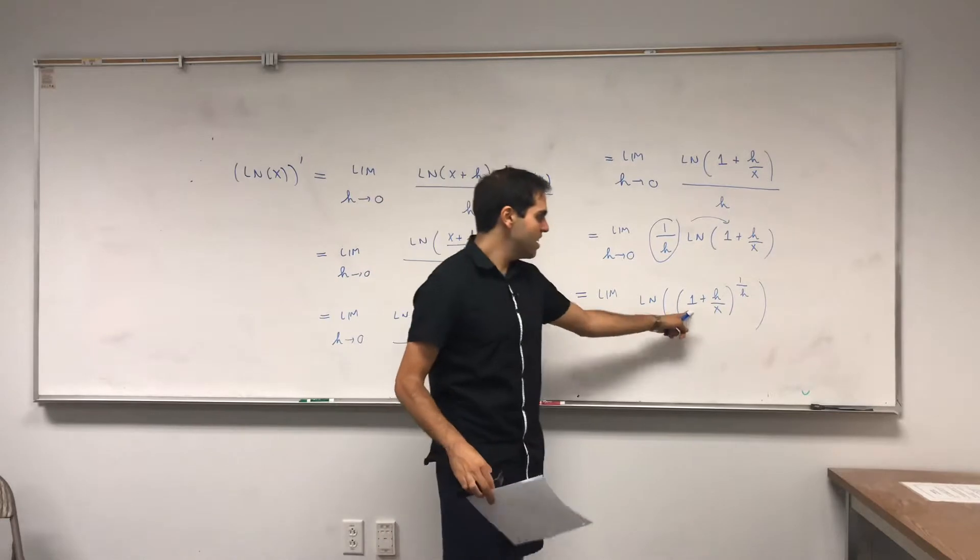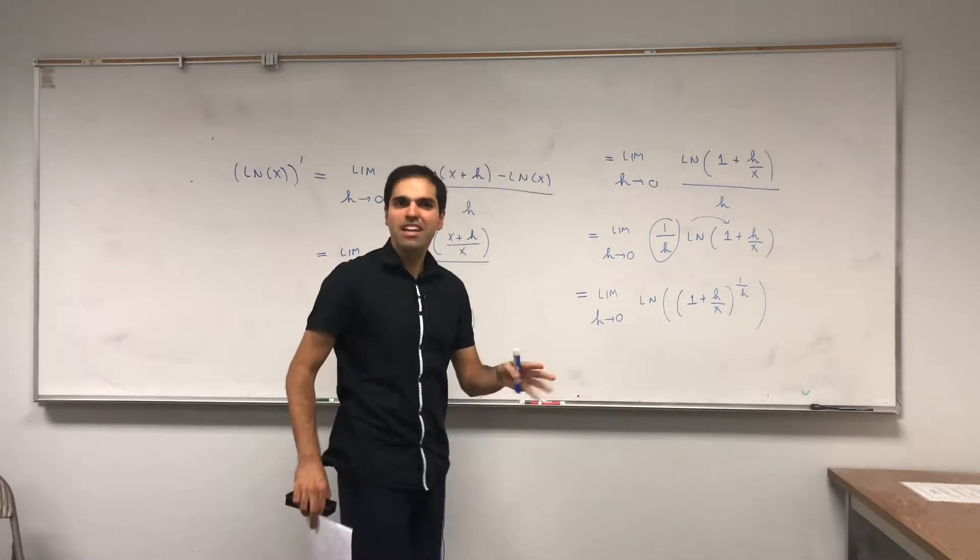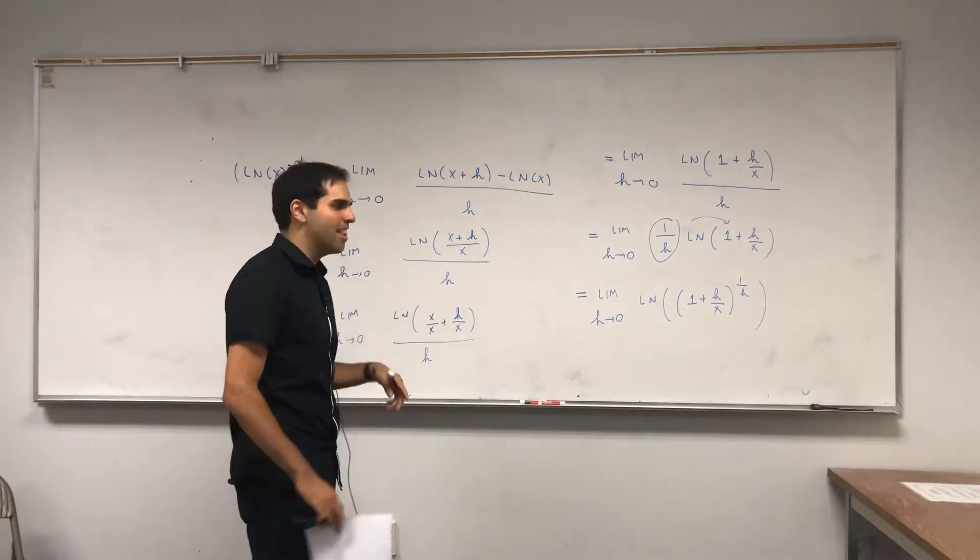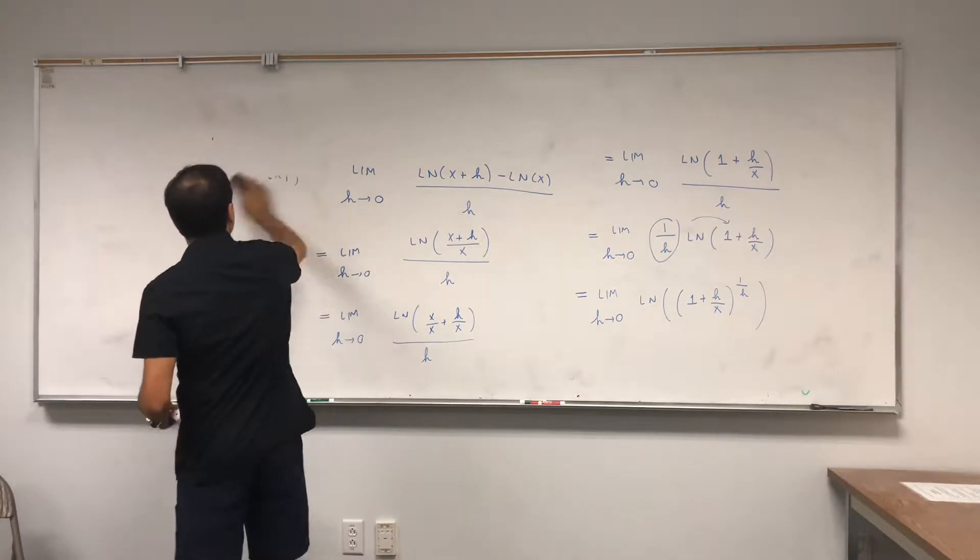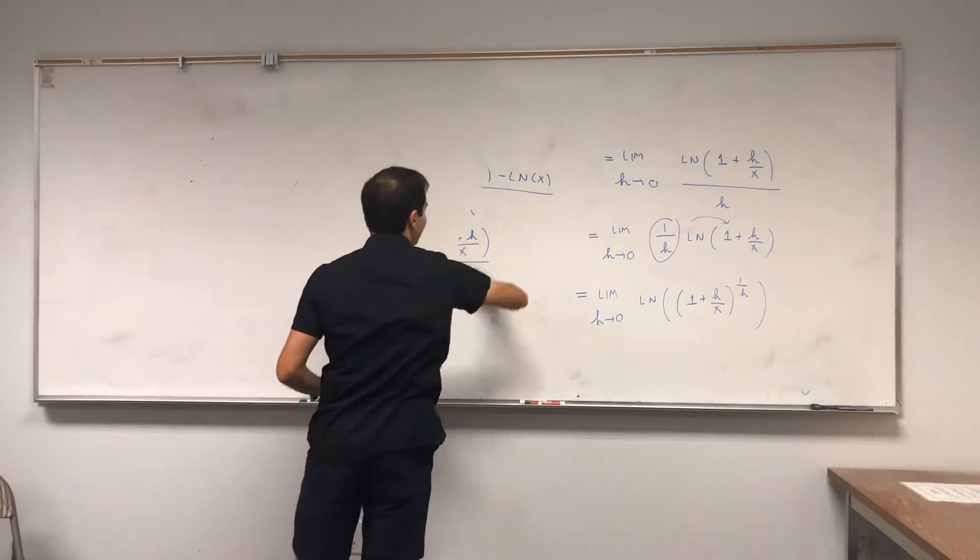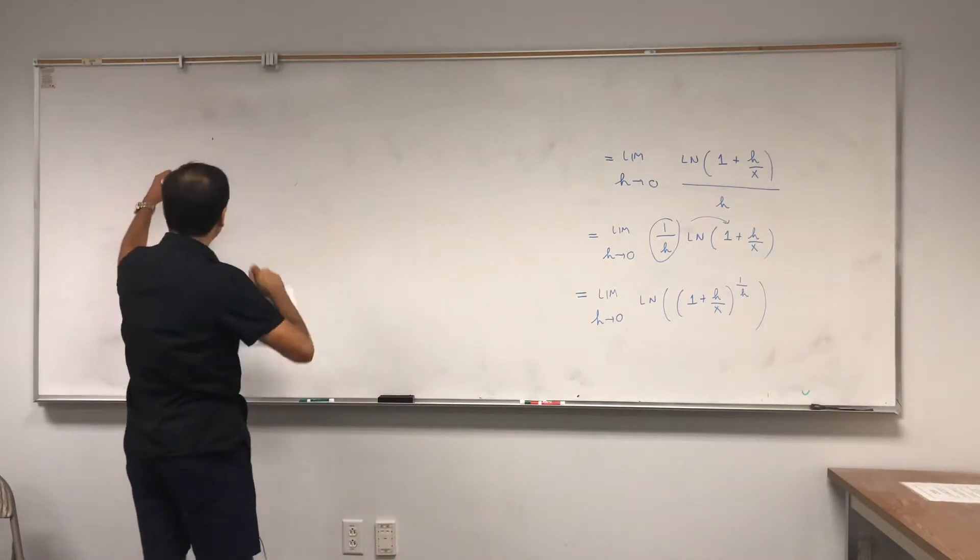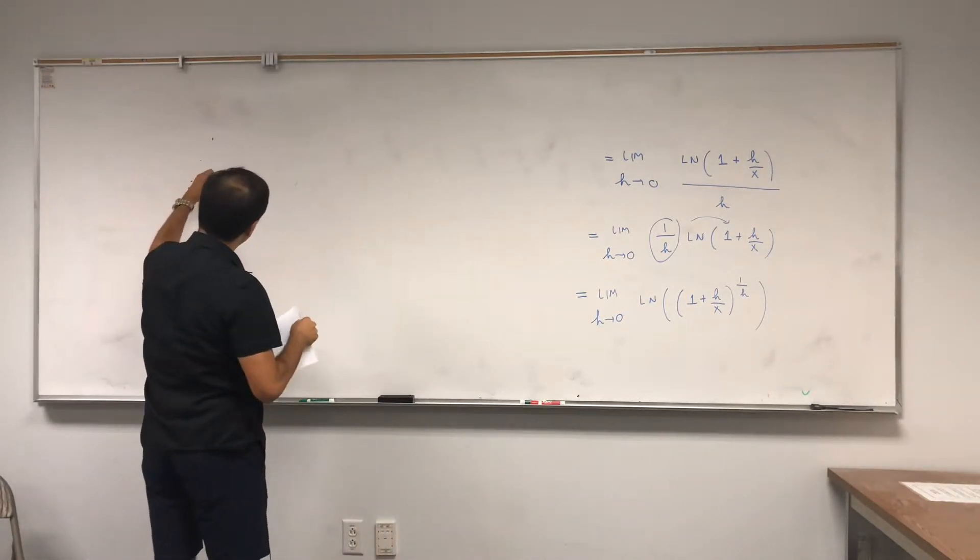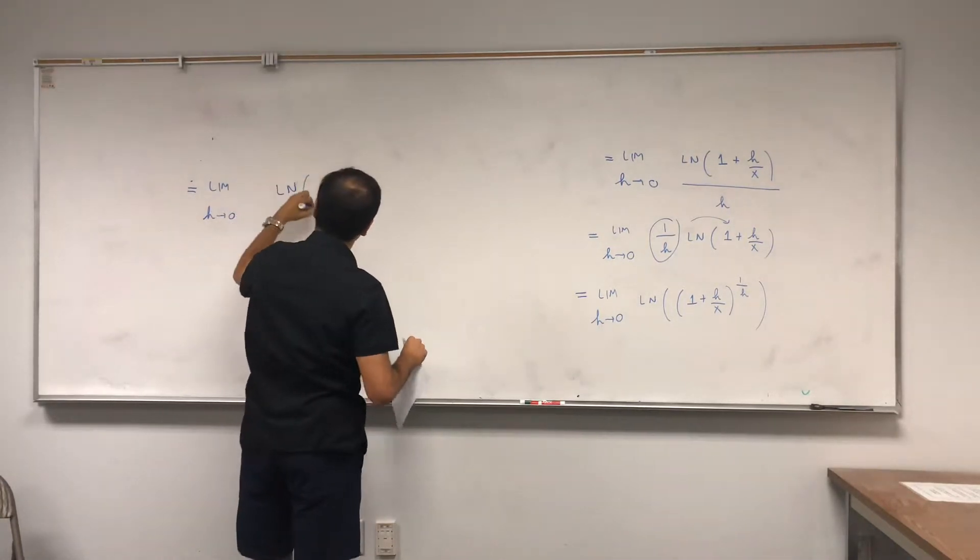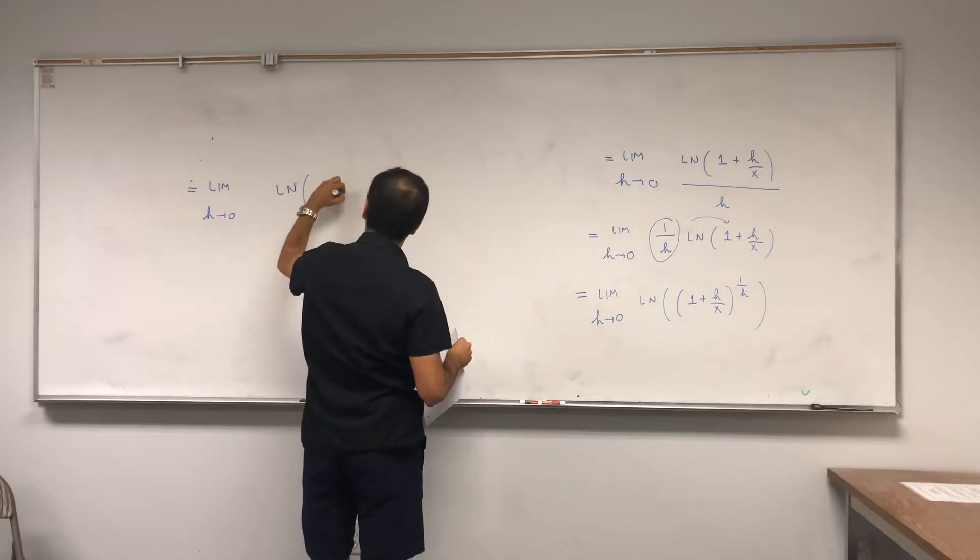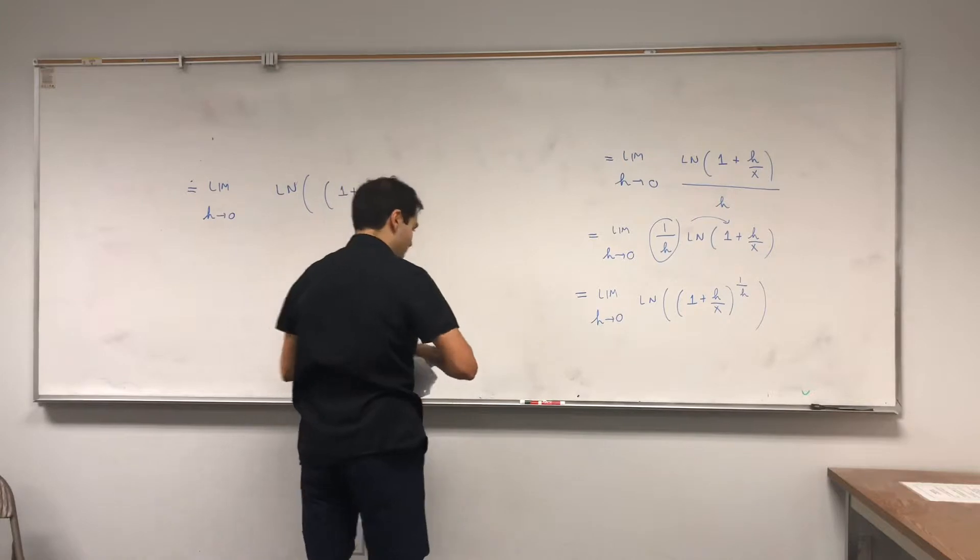It turns out this thing looks very familiar. It almost looks like limit of 1 plus 1 over n to the nth power. And the only thing we still need to do is maybe raise this to the x, you'll see this in a second why this is useful. So this becomes limit h goes to 0 of ln of 1 plus h over x to the x over h.